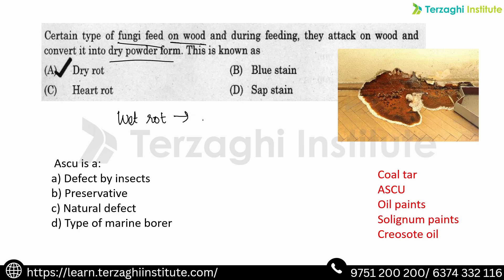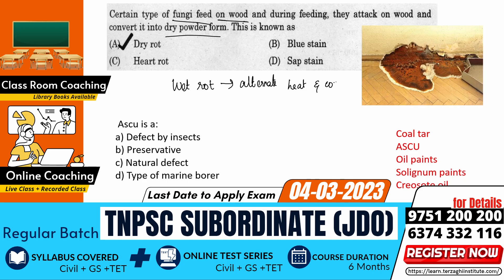Alternate cooling and heating changes — alternate heat and cool, wet and dry — these alternate changes lead to wet rot in timber.